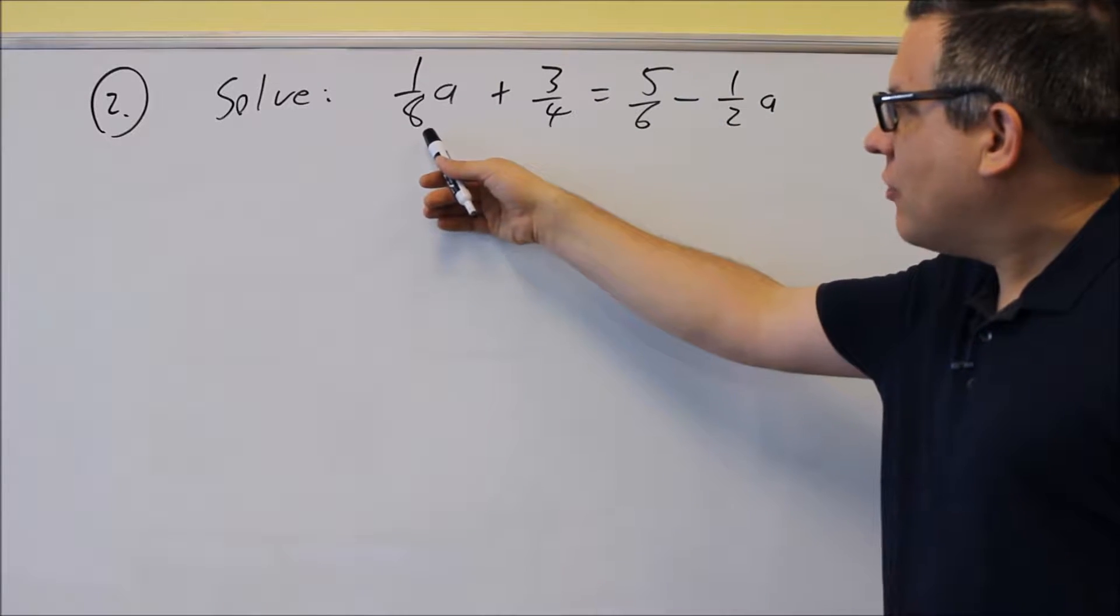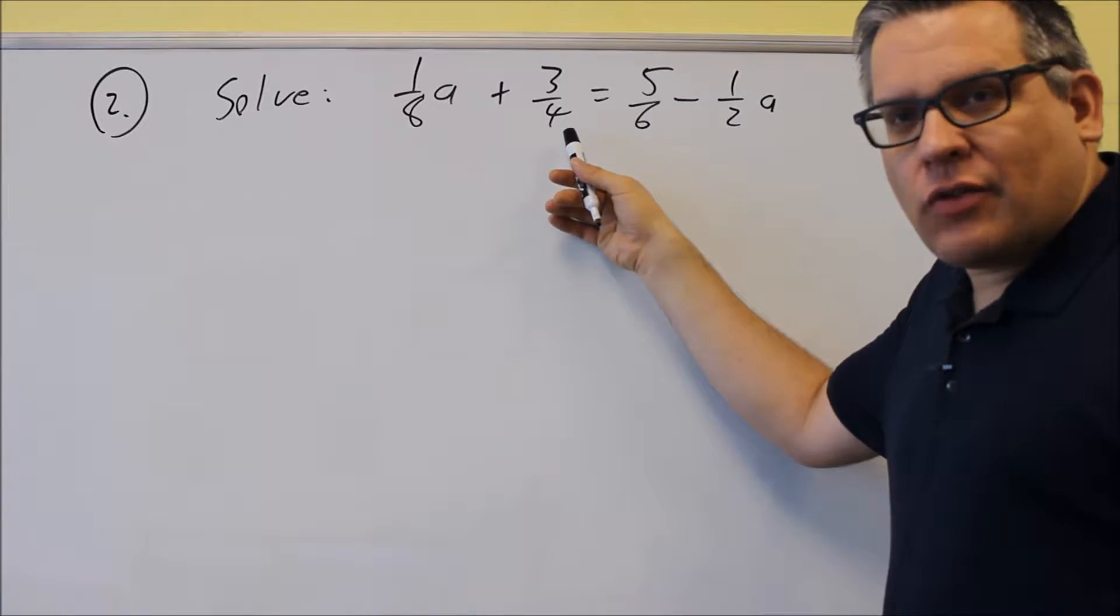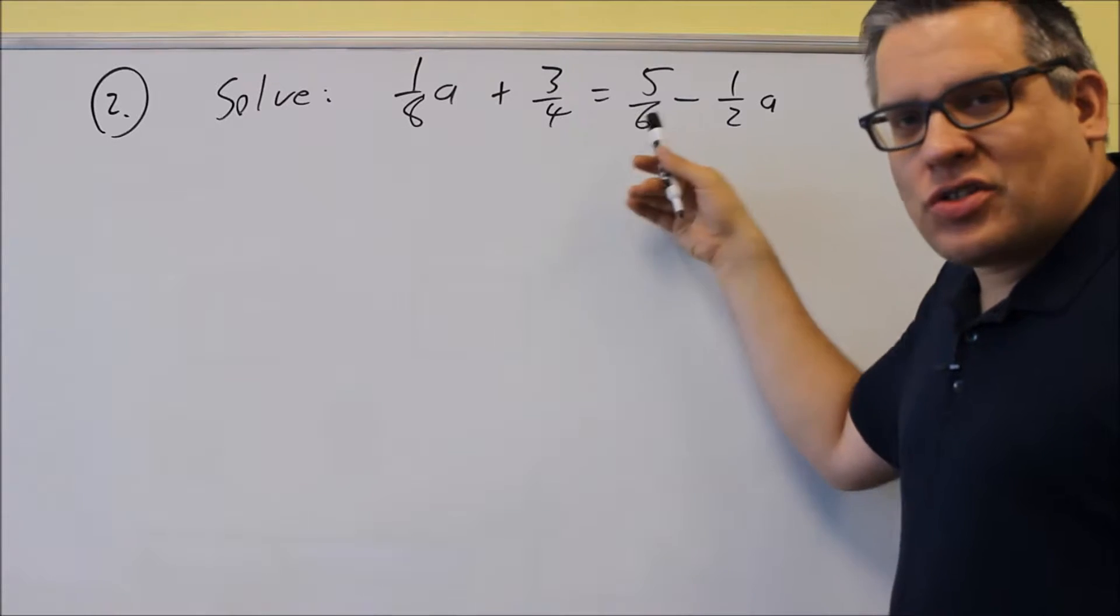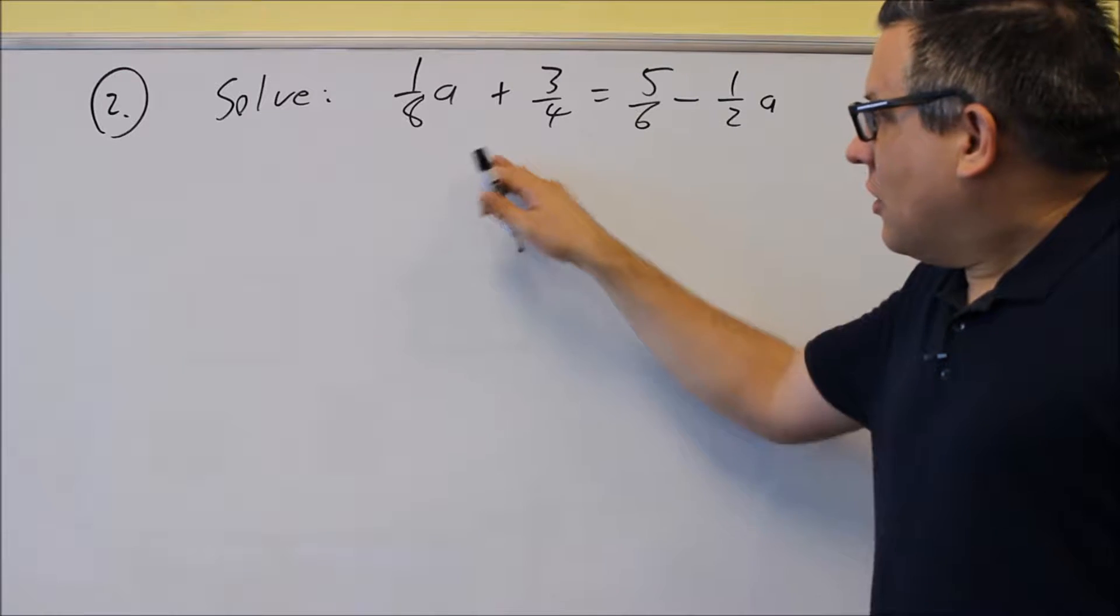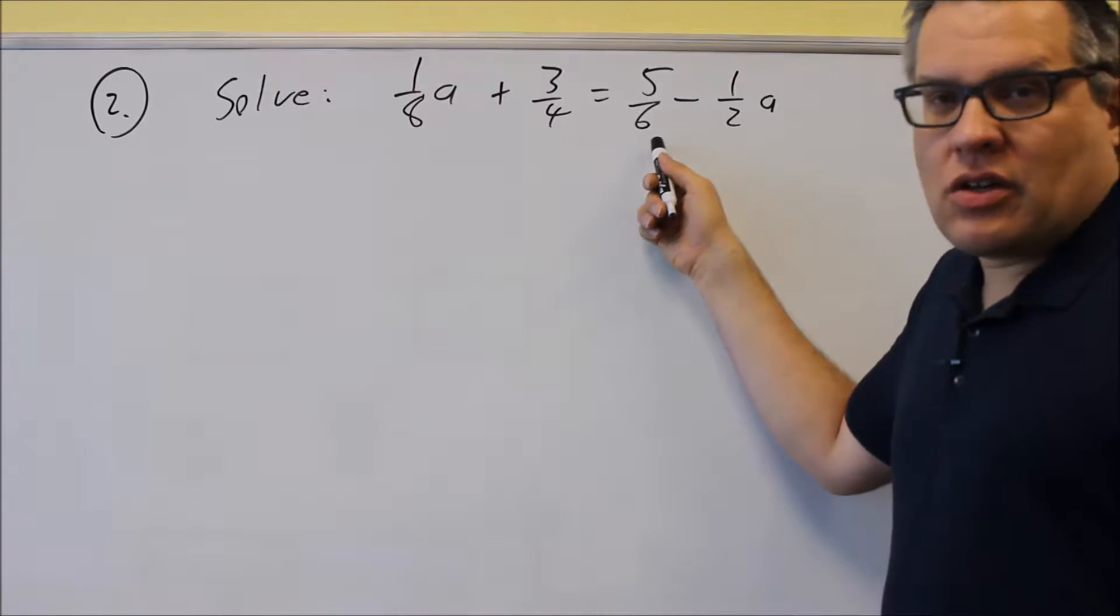start with the largest one and keep doubling that one until you find the one that all the other ones will divide into evenly. So for eight, for instance, four goes in there evenly and two goes in there, but six does not. So then I would take eight and I would double it. So then I would get sixteen. Four goes into sixteen, six does not.